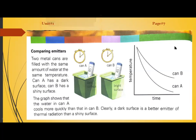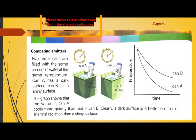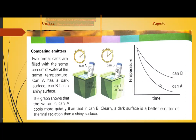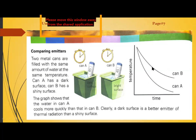From the graph, both cans start at the same temperature. As time passes, Can A loses its temperature rapidly compared to Can B, whose temperature drops more slowly. This means lighter colors emit radiation more slowly than darker colors. You can do this experiment at home and draw your conclusions in your science notebook.